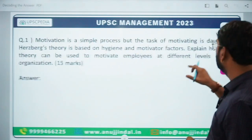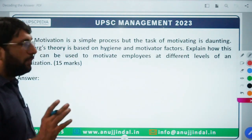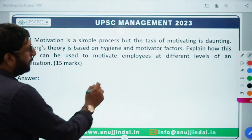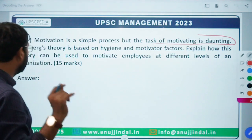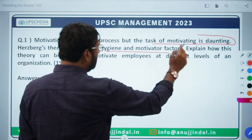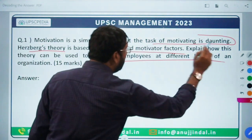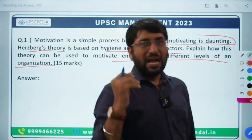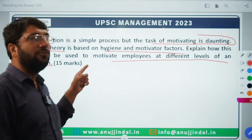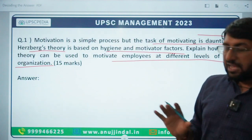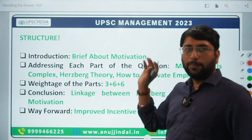This is usually for management students but commerce students and others can also use it. For simplicity, I've taken an example from OB (Organizational Behavior), which is common to both commerce and management students. The question is: 'Motivation is a simple process but the task of motivating is daunting.' Herzberg's theory is based on hygiene and motivation factors. The third part of the question: explain how this theory can be used to motivate employees at different levels of an organization. You have to remember — you have to link it to different levels: top level management, middle level management, and lower level management. So there are three parts of the question we need to answer.